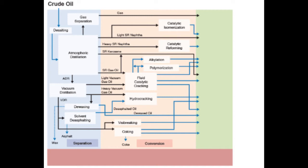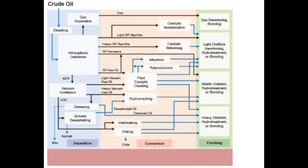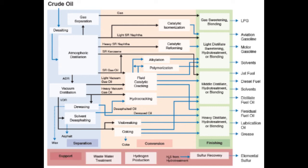Let's now look at the fate of all the streams coming from the separation and conversion units as they go through the finishing processes to become the final products that leave the refinery. Starting from the top: the gas product from gas separation goes through sweetening and blending to make LPG. Light straight-run NAFTA and the product from catalytic isomerization are fed to a light distillate sweetening, hydrotreating, or blending process, along with products from catalytic reforming, alkylation, polymerization, and fluid catalytic cracking, to produce aviation gasoline, motor gasoline, and solvents like benzene, toluene, or xylene.